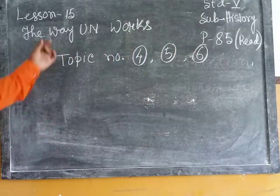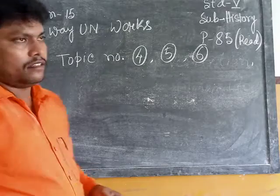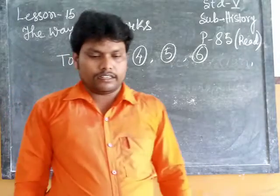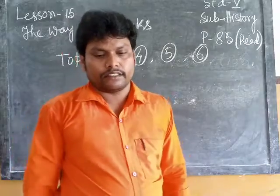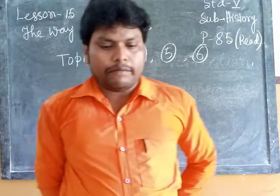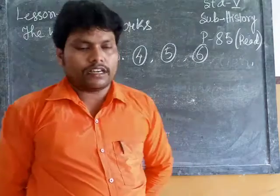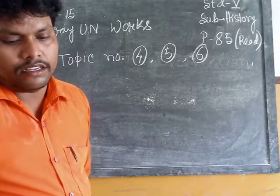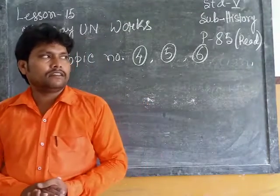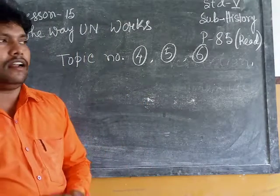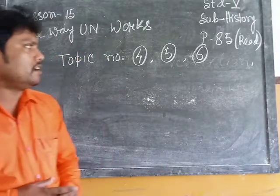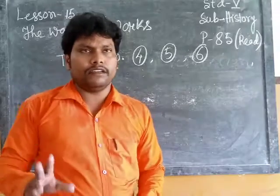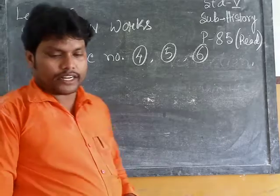Today we will discuss lesson 15, the way the United Nations works. In the previous classes, we started page number 84. The learning point was the main organs of the United Nations. We have discussed only three organs: the General Assembly, the Security Council, and the Secretariat. Today we will read and discuss topic number 4, as there are three other organs.